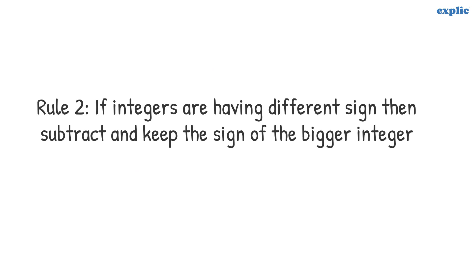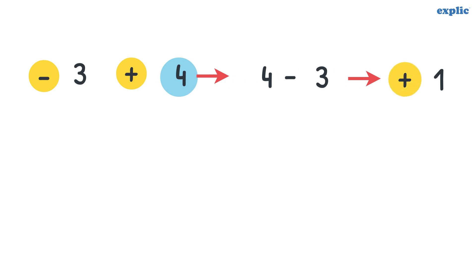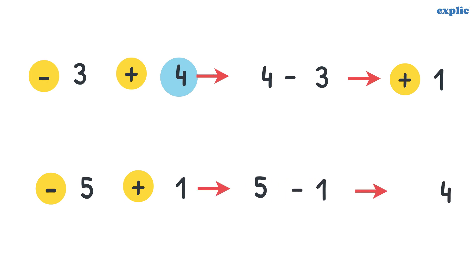Rule 2 says: if integers have different signs, then subtract and keep the sign of the bigger integer. Here, minus 3 and plus 4 have different signs. Hence subtract 3 from 4. Since 4 is the bigger number and it has a plus sign, the answer is plus 1. Similarly, minus 5 and plus 1 have different signs. Hence subtract 1 from 5. Since 5 is the bigger number and it has a minus sign, the answer is minus 4.